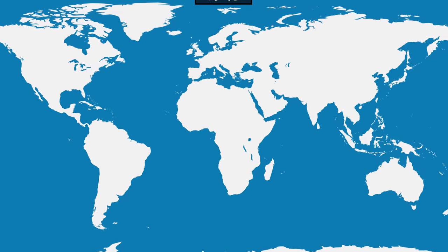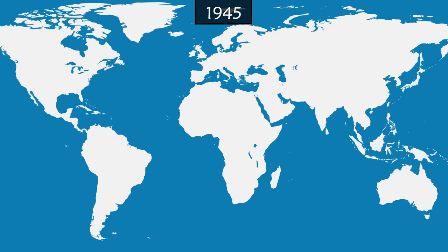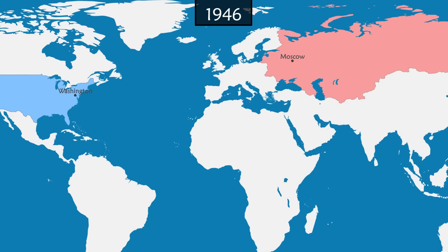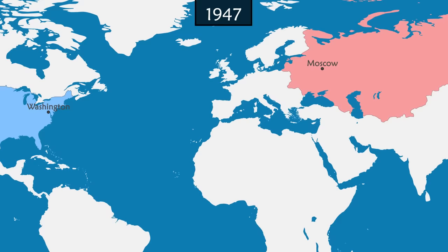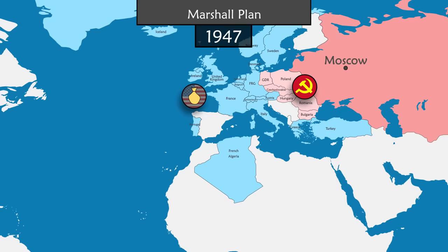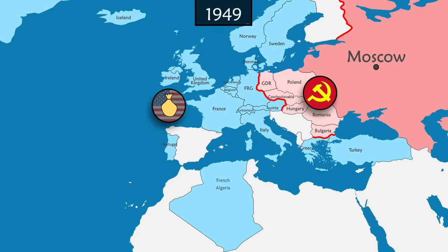The story begins at the end of World War II, as the European continent lies devastated, leaving the United States and the USSR as the two major world powers. Their growing rivalry marks the beginning of the Cold War. While the Soviets control Eastern Europe, the West looks to the US for reconstruction aid. While the Old Continent is found divided by the Iron Curtain, in the West, the idea of European unity begins to take hold.